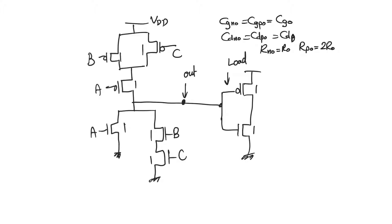Delay is naturally going to be 0.69 times the time constant. The time constant consists of the capacitance at the output node and the resistance that is charging or discharging this capacitance. The problem is that the resistance charging or discharging the capacitance is going to depend on the input combination. For example, if the path through A and BC is active, it provides a different resistance from the case where only path A or only path BC is active.